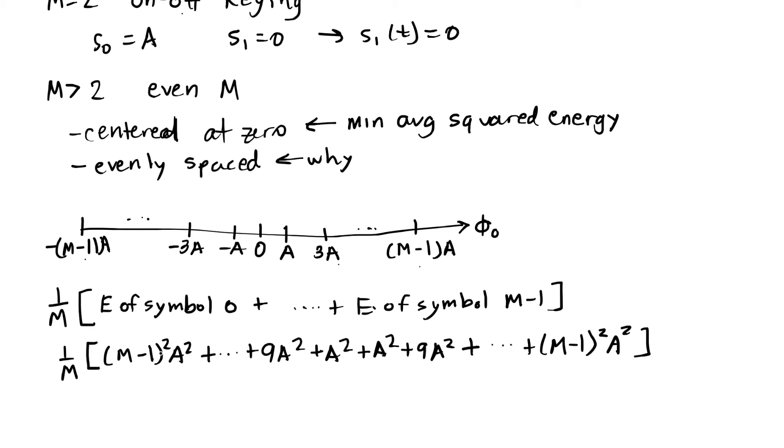Of course, this is going to require knowing what M is. But we can use an arithmetic series formula to show that this results in an average energy of M squared minus 1 divided by 2 times A squared. So this is the average symbol energy.